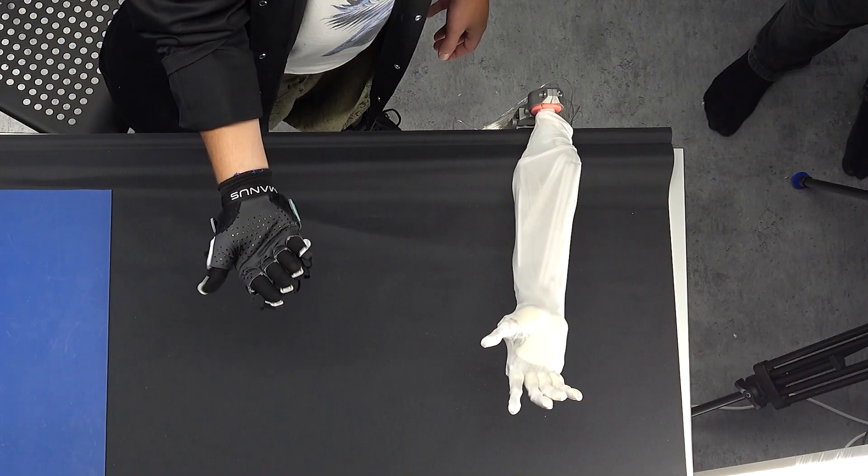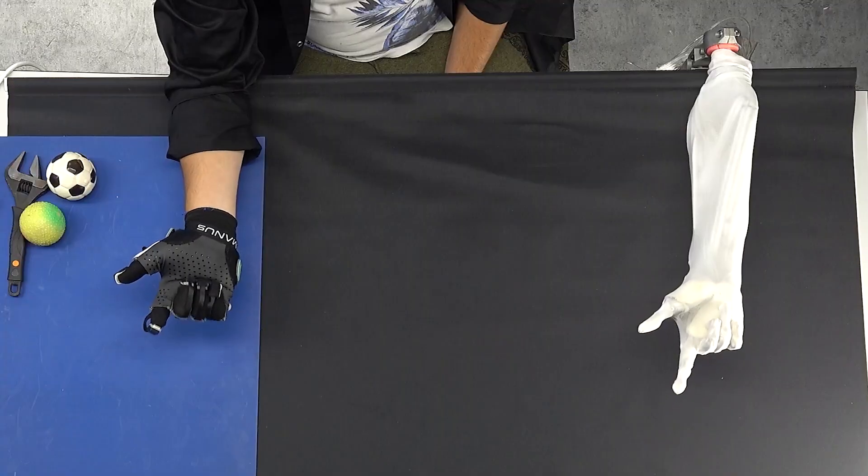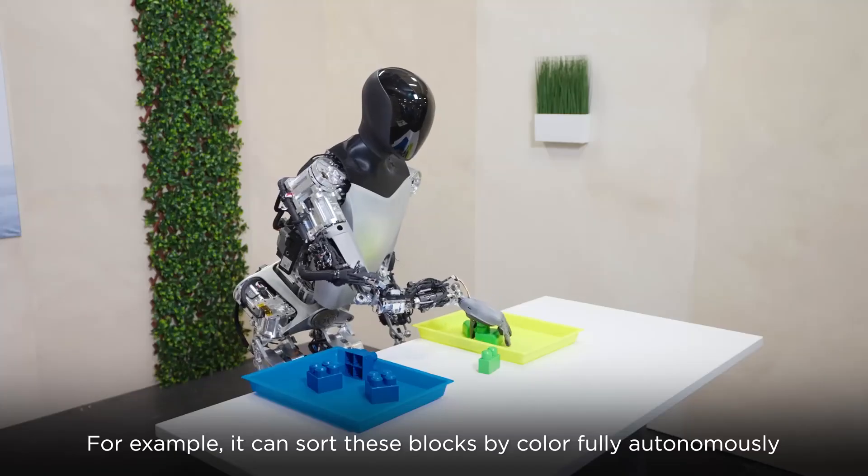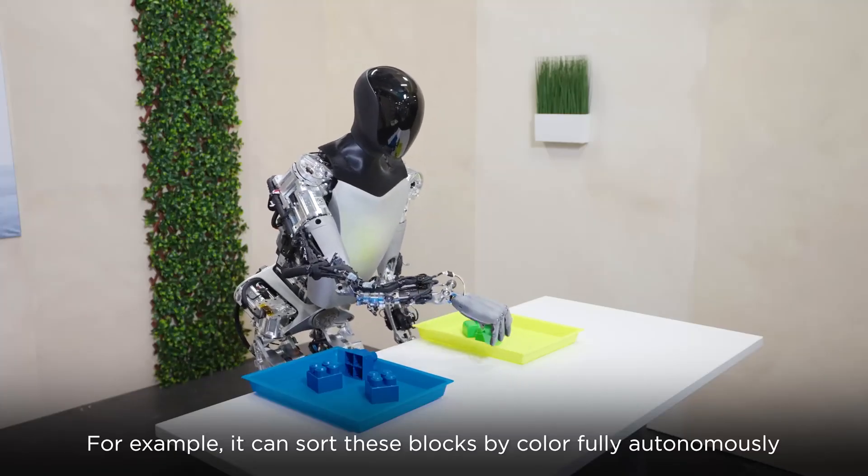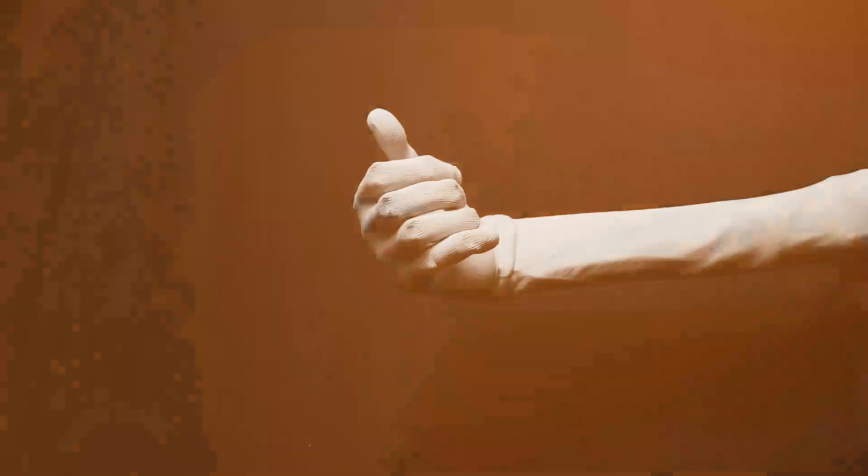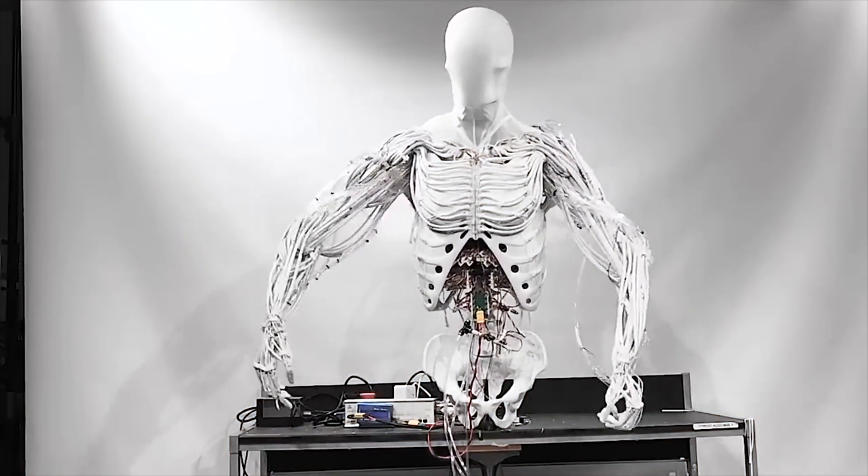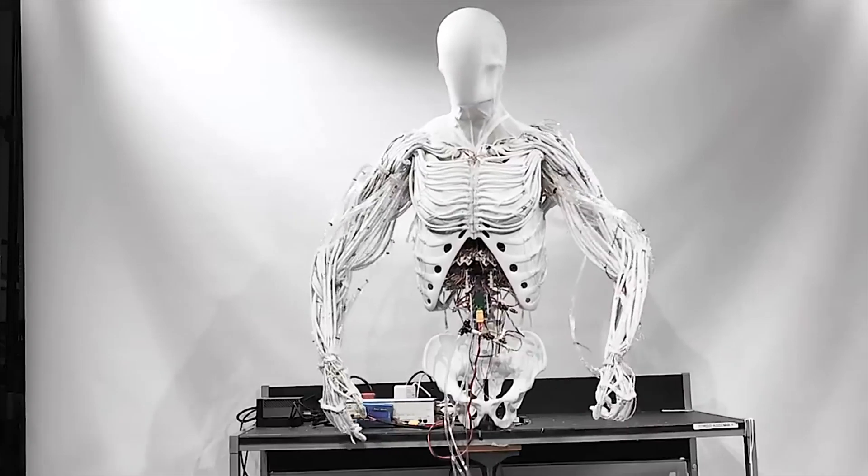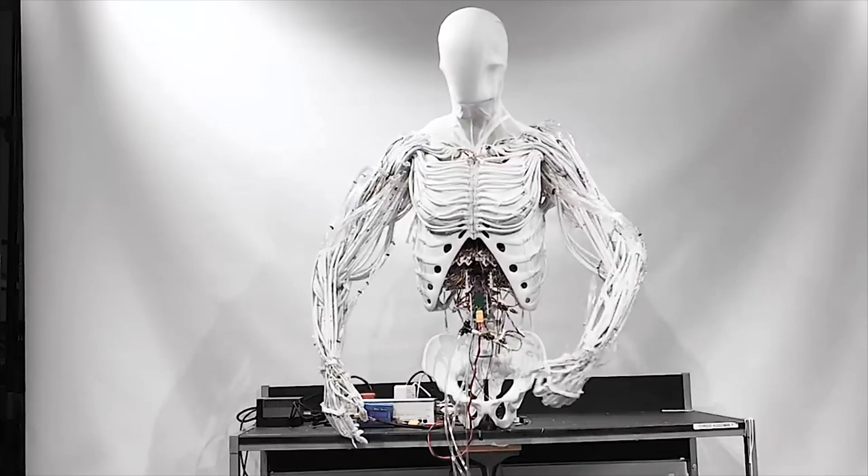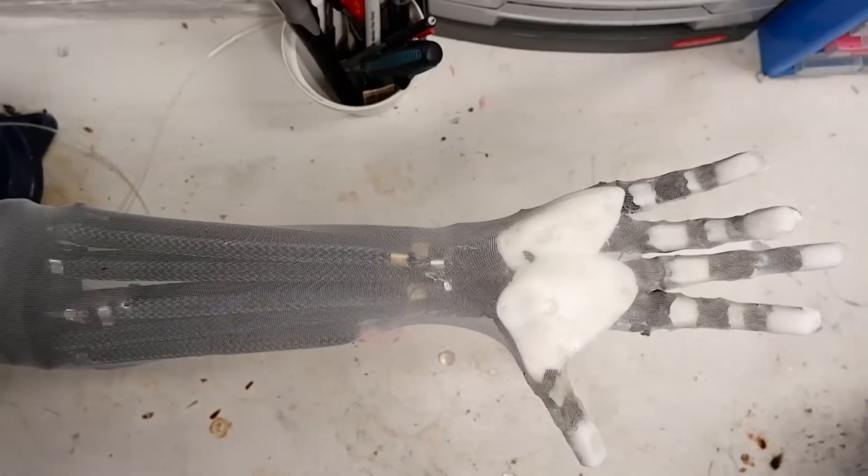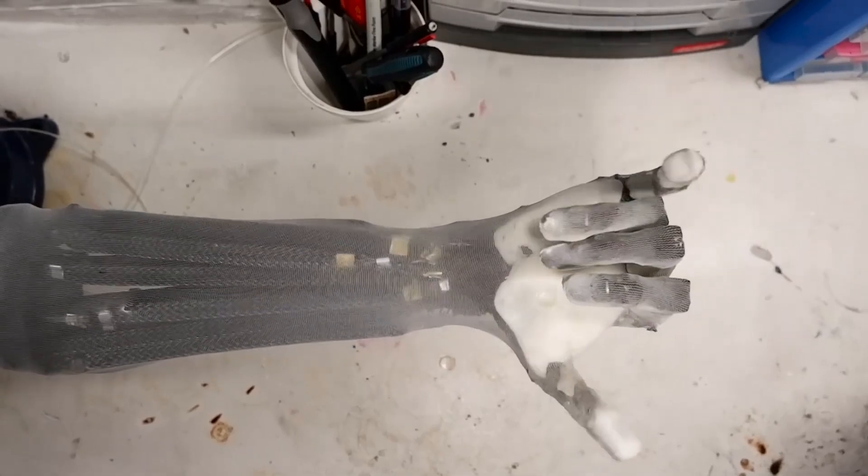Traditional robots often have bulky, exposed mechanical systems, but the Torso takes a different approach. Inside its rib cage—yes, it has a rib cage—sits a compact valve matrix that controls all of these movements. This isn't just about aesthetics; it's about creating a system that's as efficient and self-contained as possible.